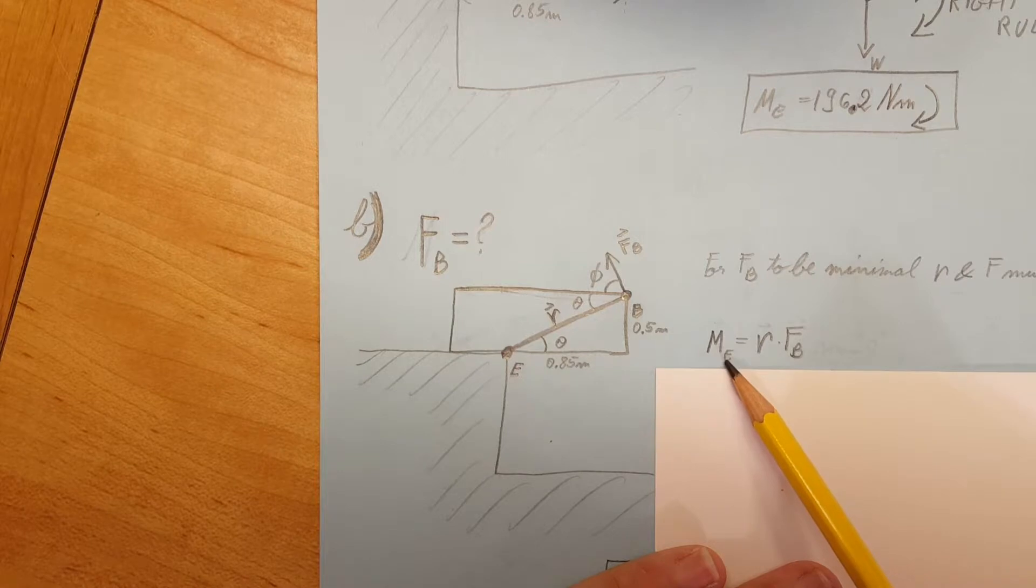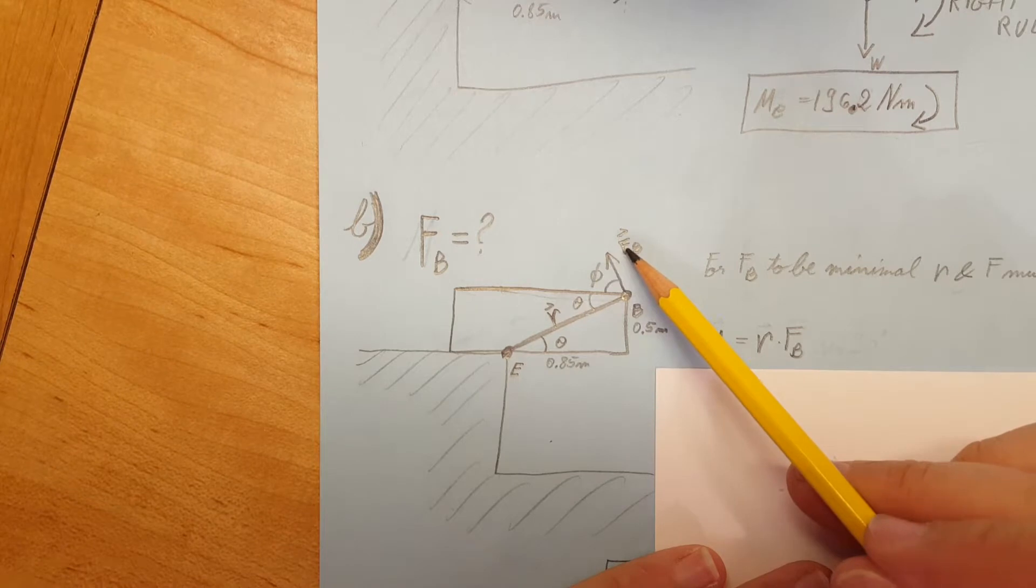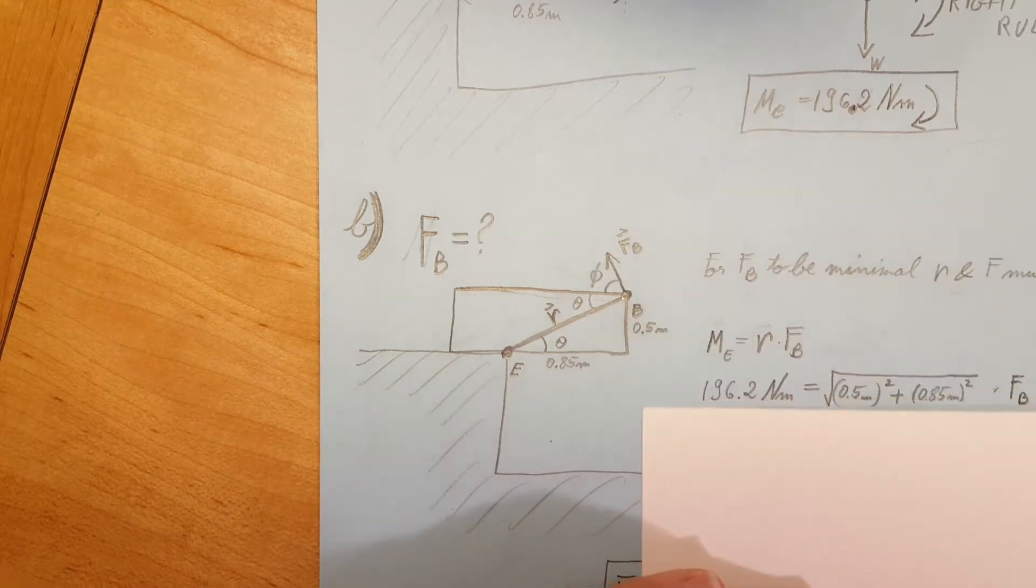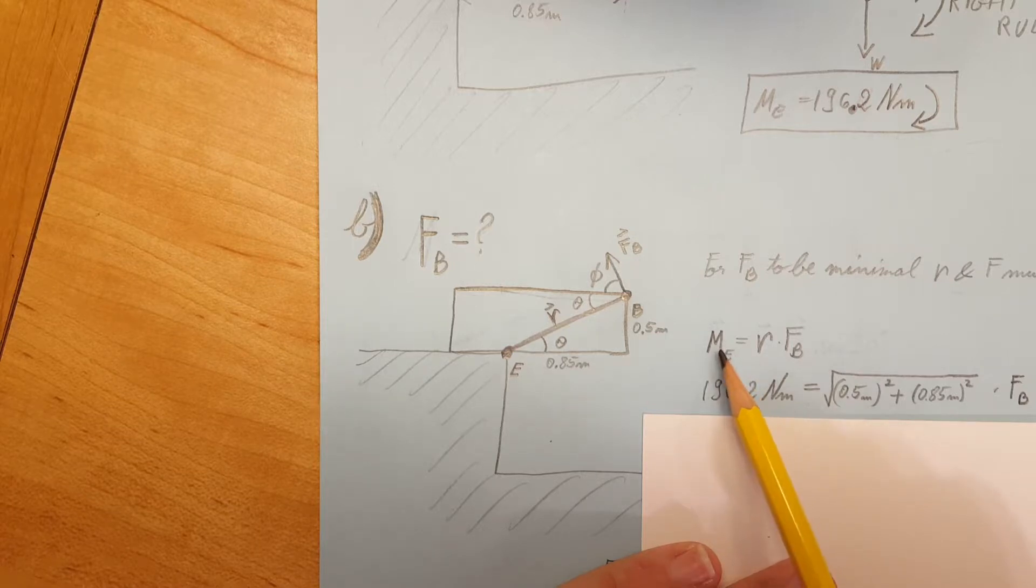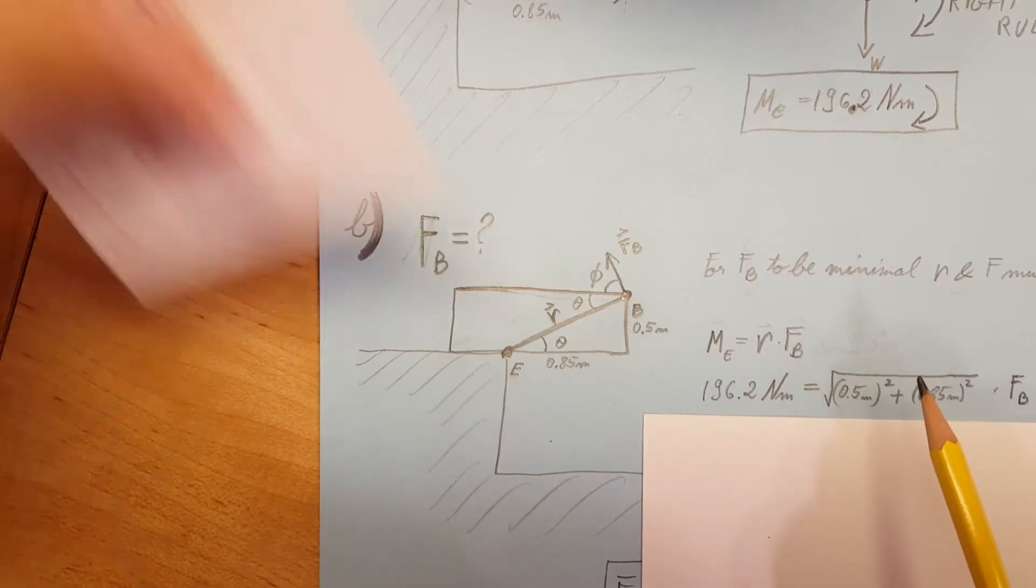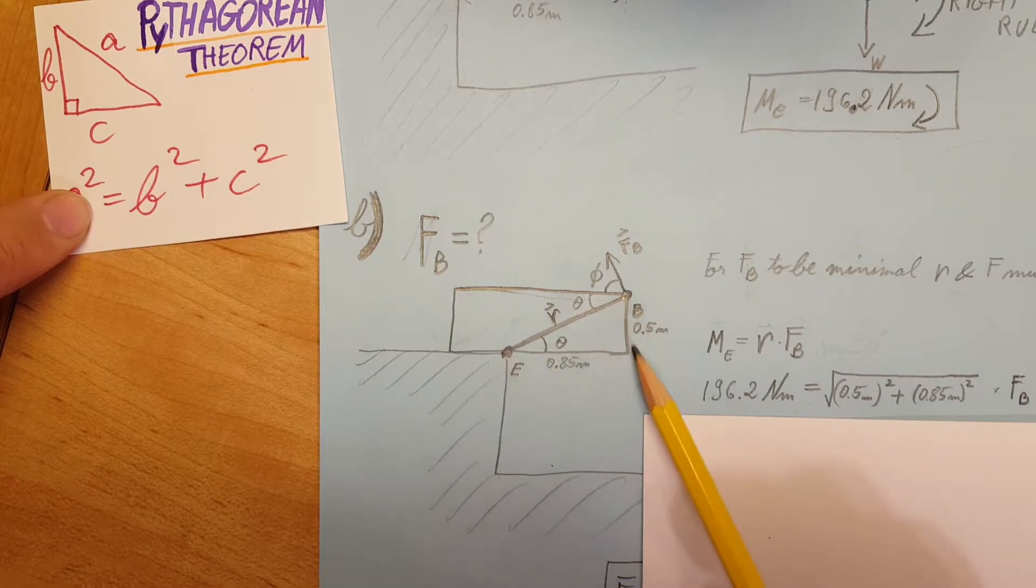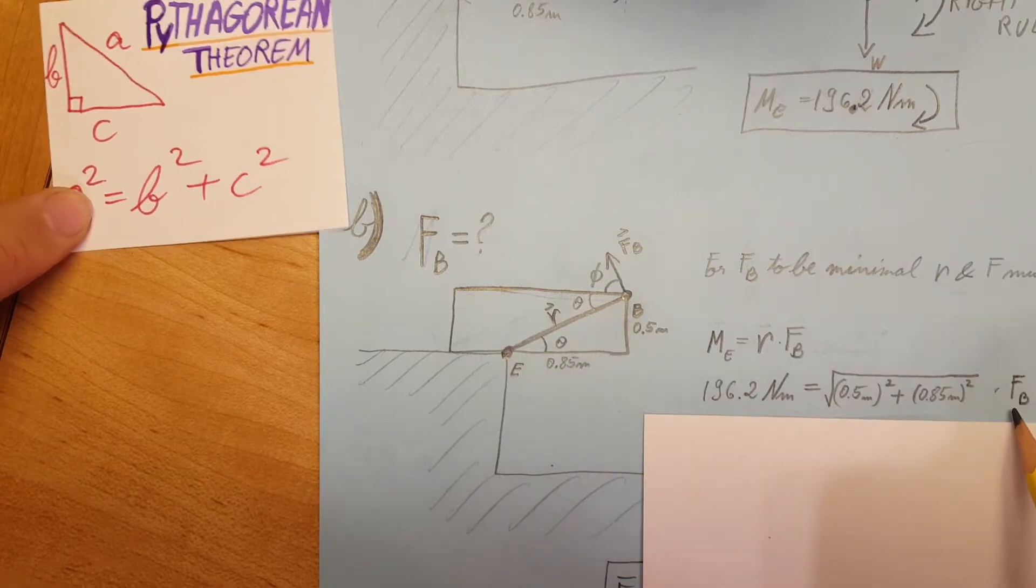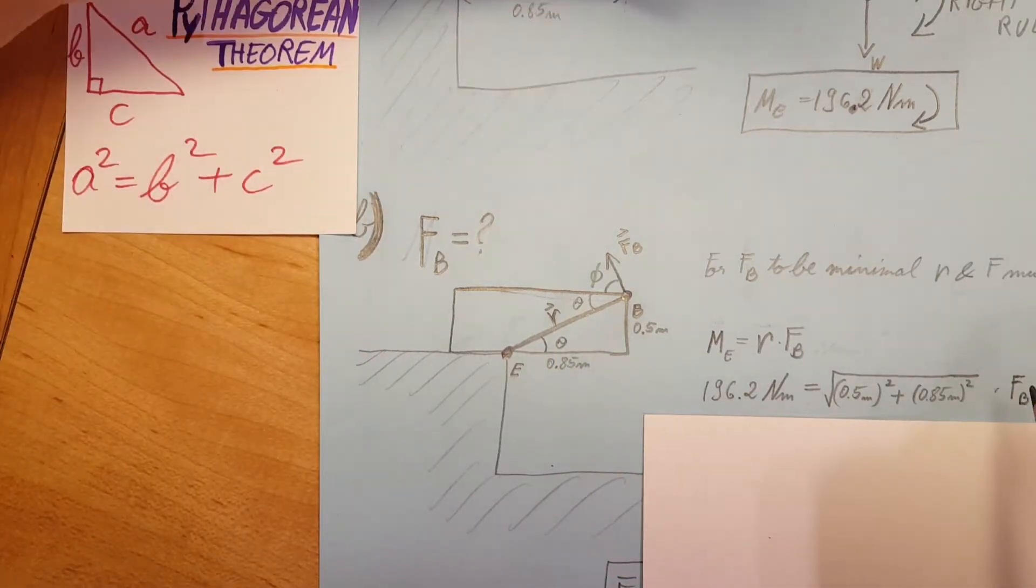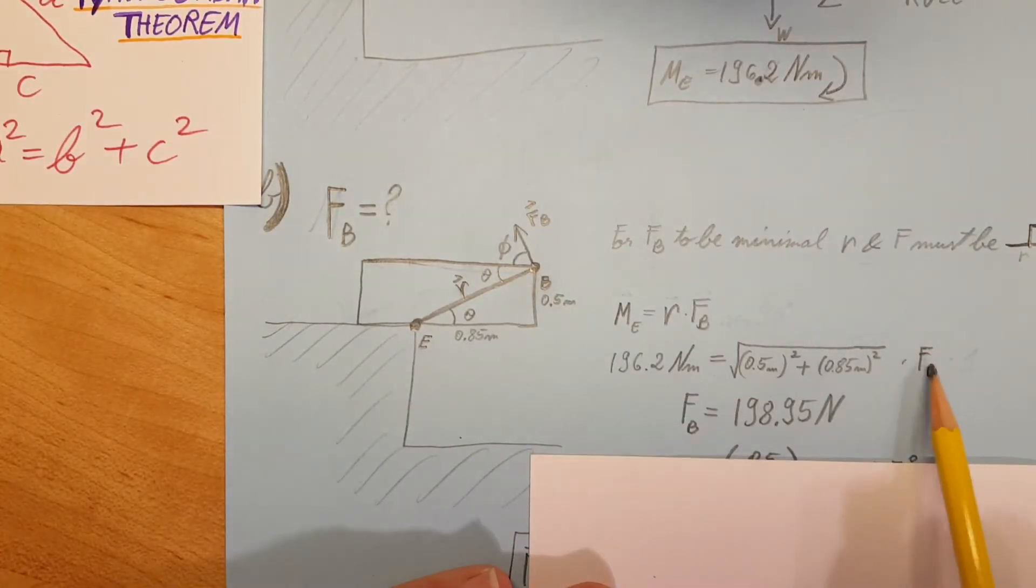The moment about point E equals r times our new force which is F_B. 196.2 newton meters we found it in part A—we're using the same magnitude—equals r, which we can find with the Pythagorean theorem from this triangle right here, times F_B. We're going to solve for F_B and this is our value. This is the magnitude of our force.